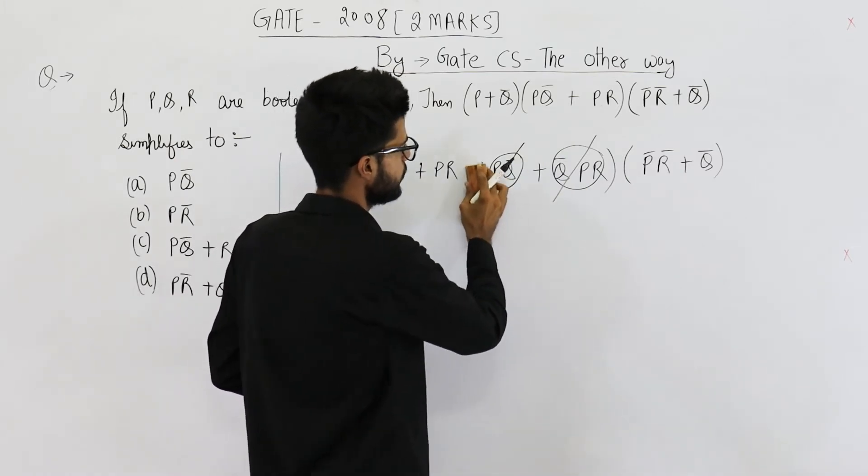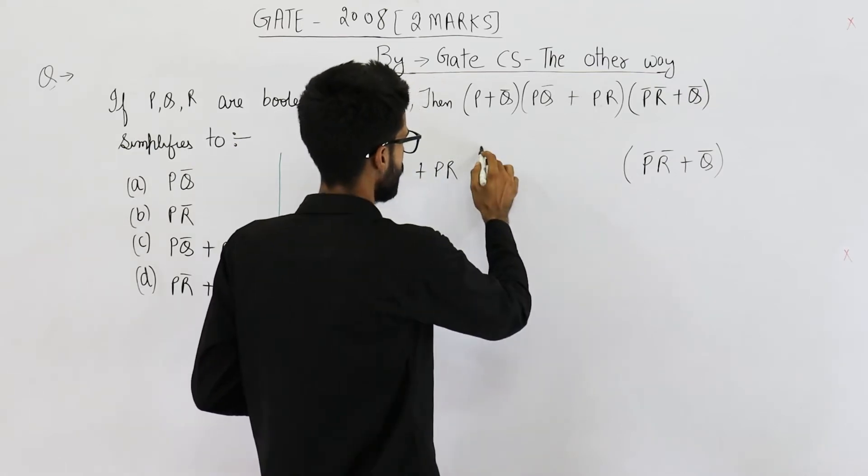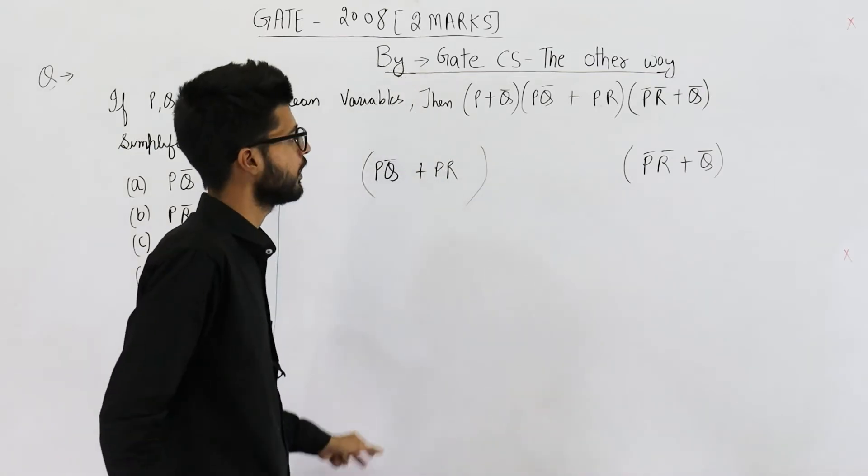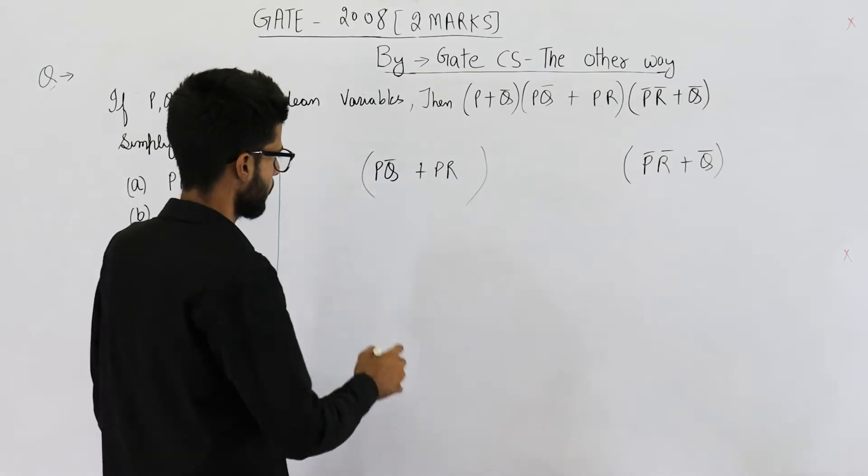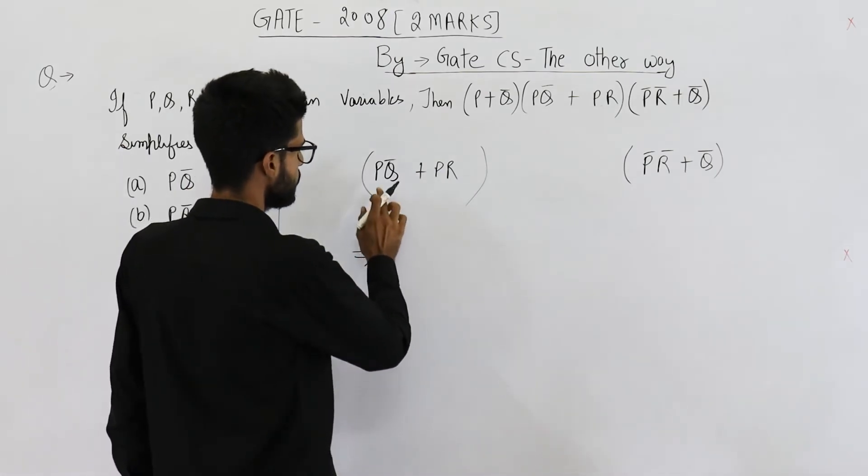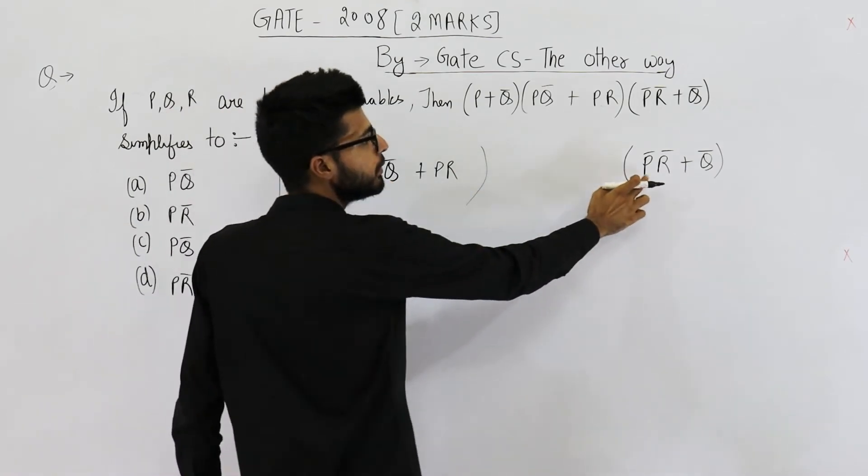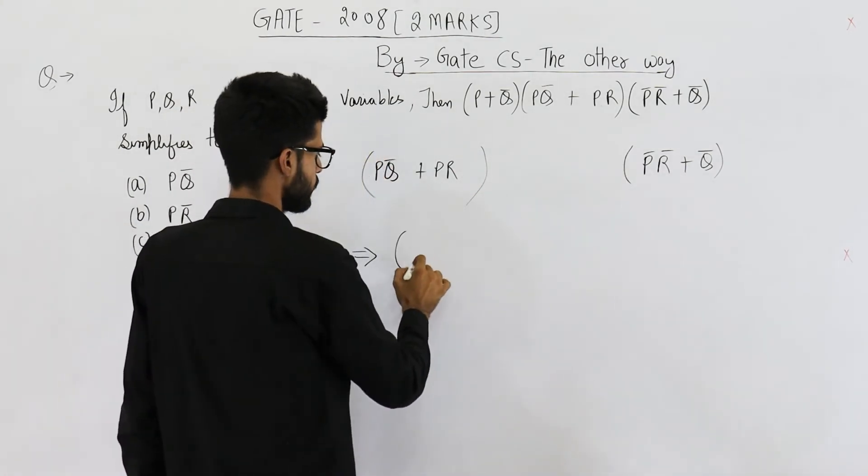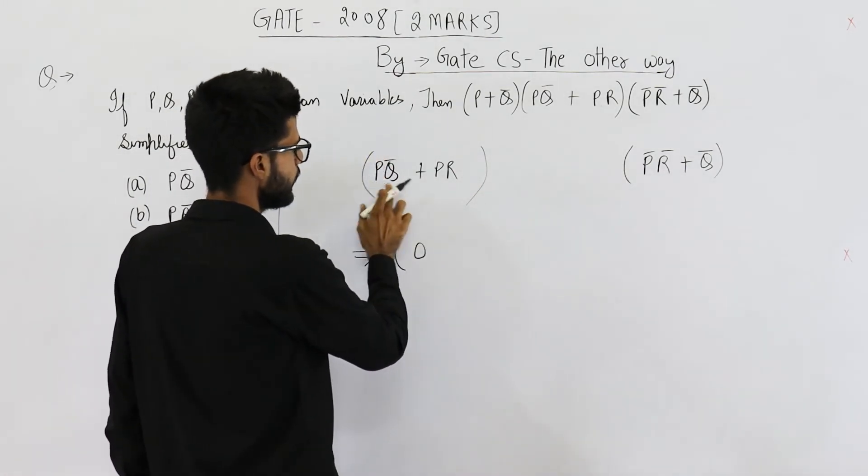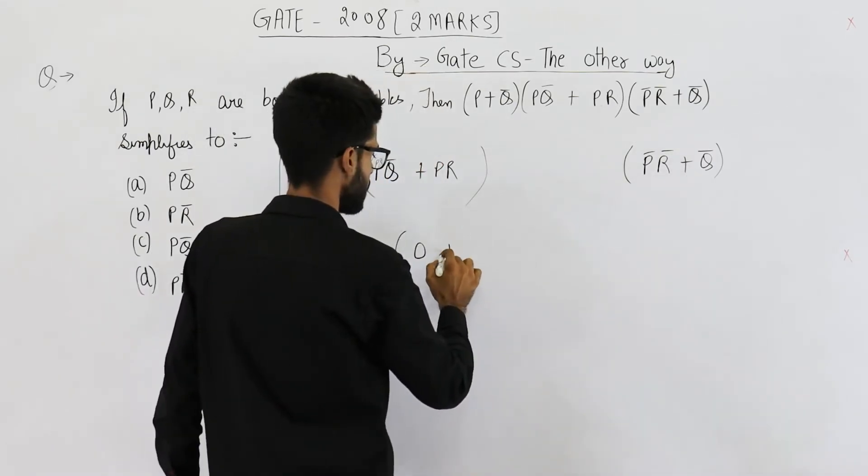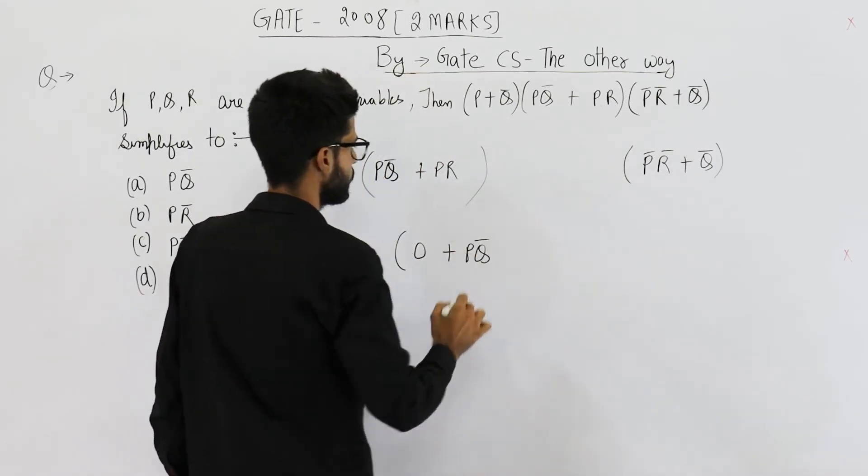That means this is what you get. So let's open these brackets also. You can see PQ̄ · P̄ will be zero, so the first term will be zero. Then let's multiply PQ̄ with Q̄, you will get PQ̄.